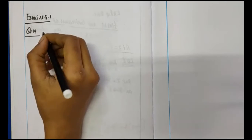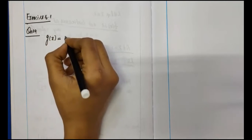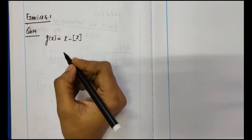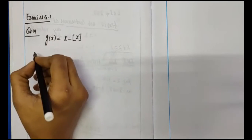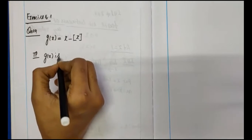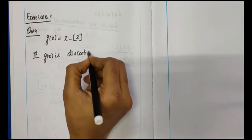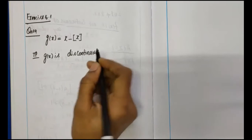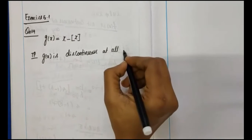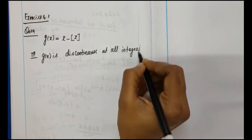The function in this question is g of x, which is equal to x minus the greatest integer function. We need to prove that g of x is discontinuous — that is, not continuous — at all integral points.